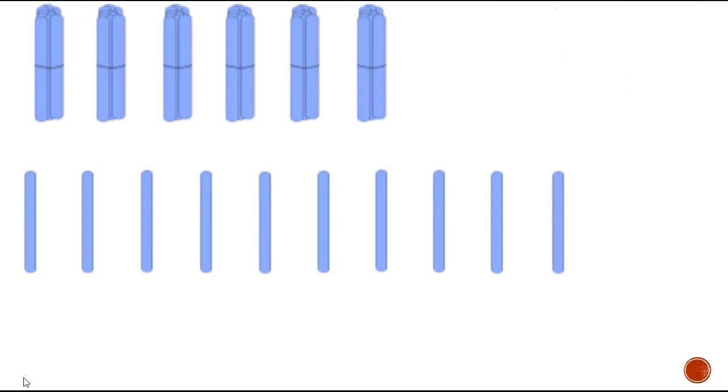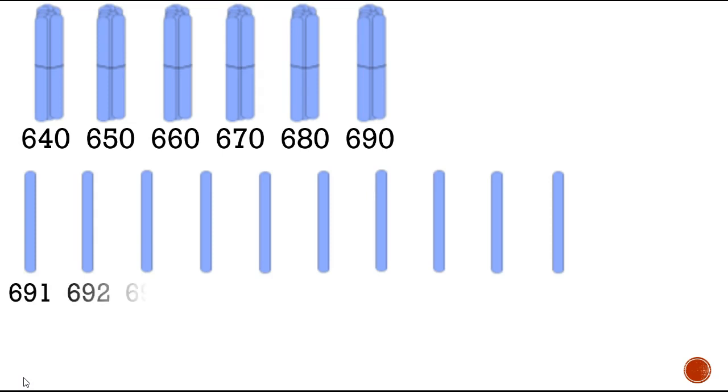Okay now we're going back to tens, so 630, 640, 650, 660, 670, 680, 690. Now we're going to ones: 690, 691, 692, 693, 694, 695, 696, 697, 698, 699, 700.